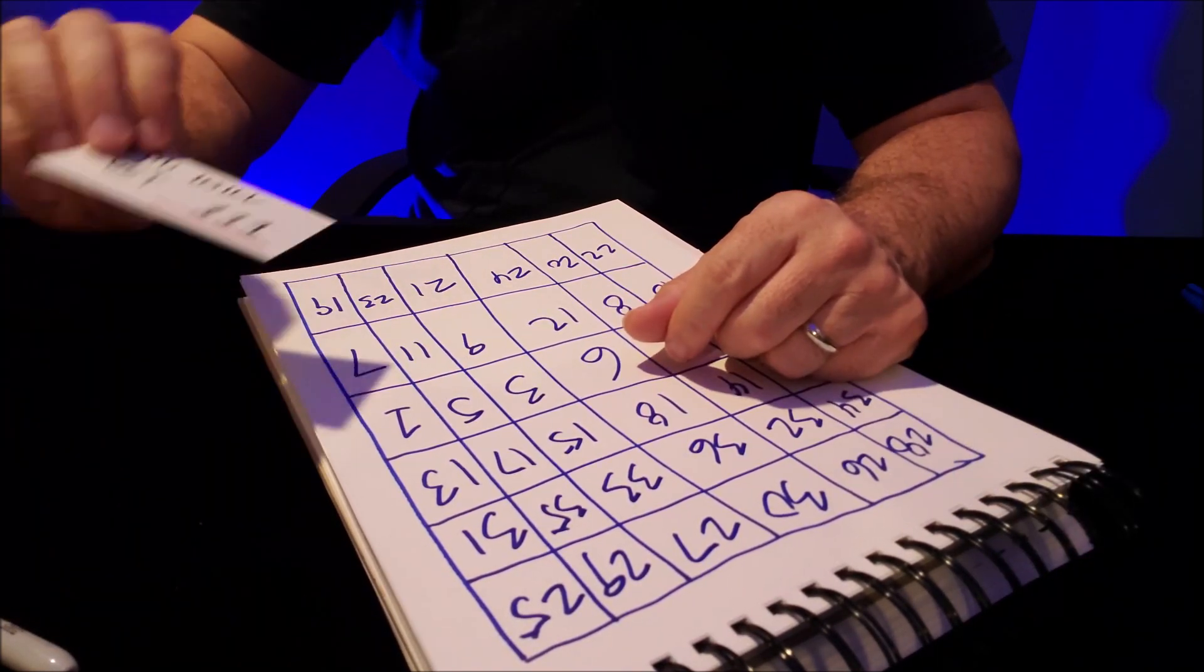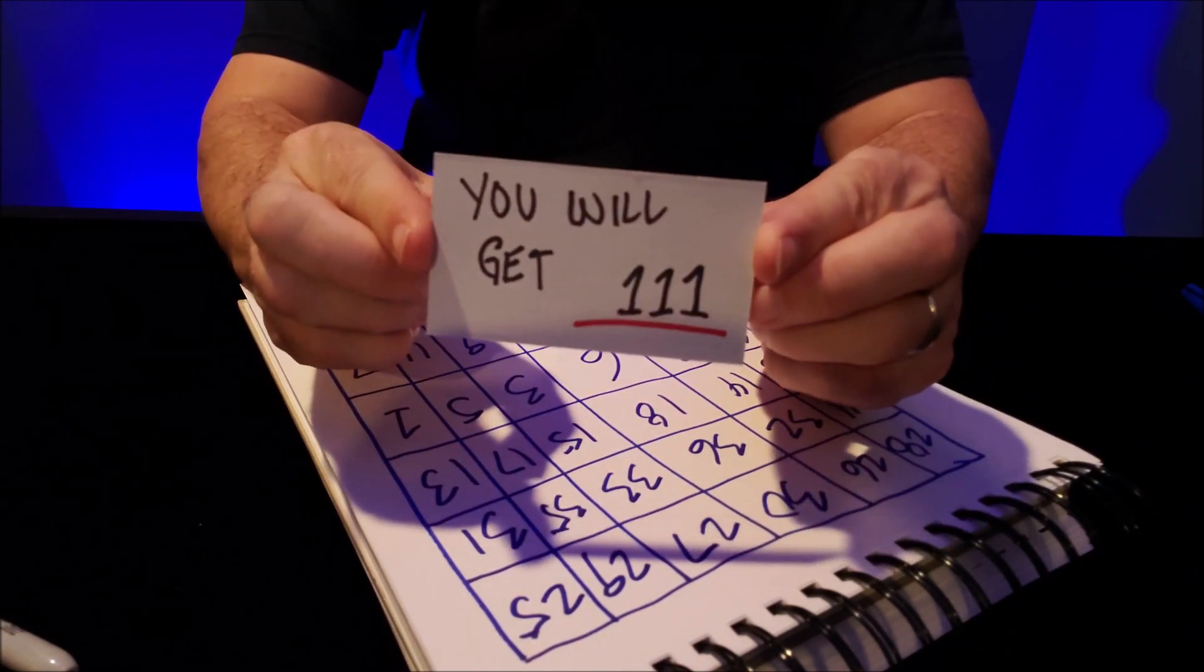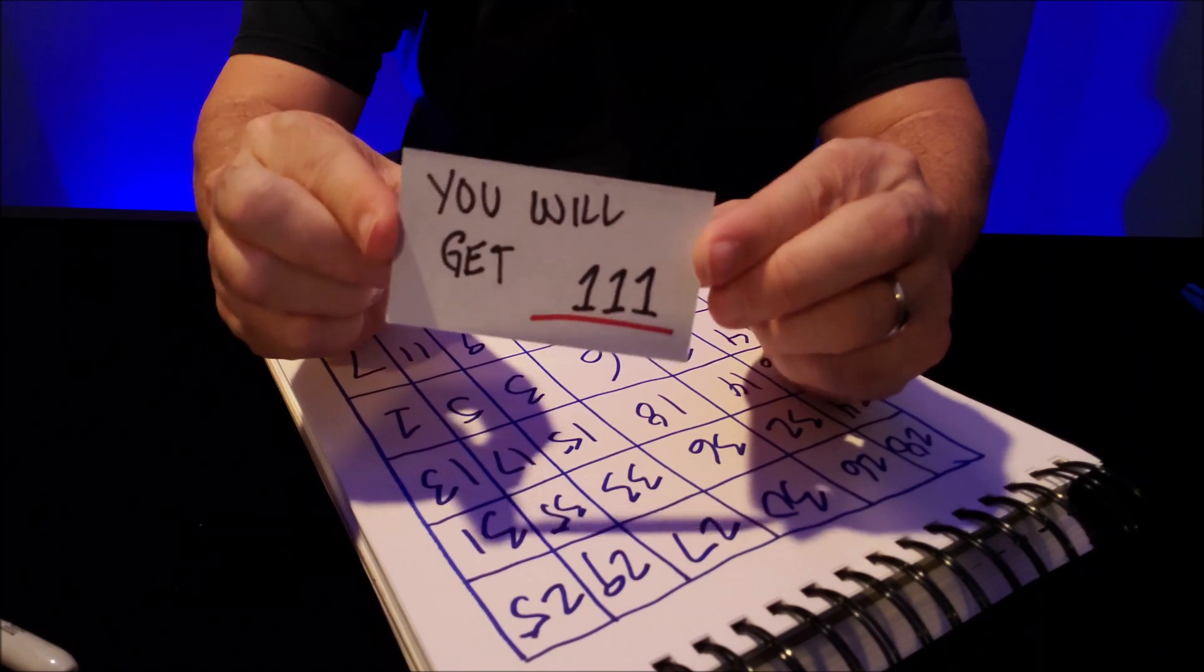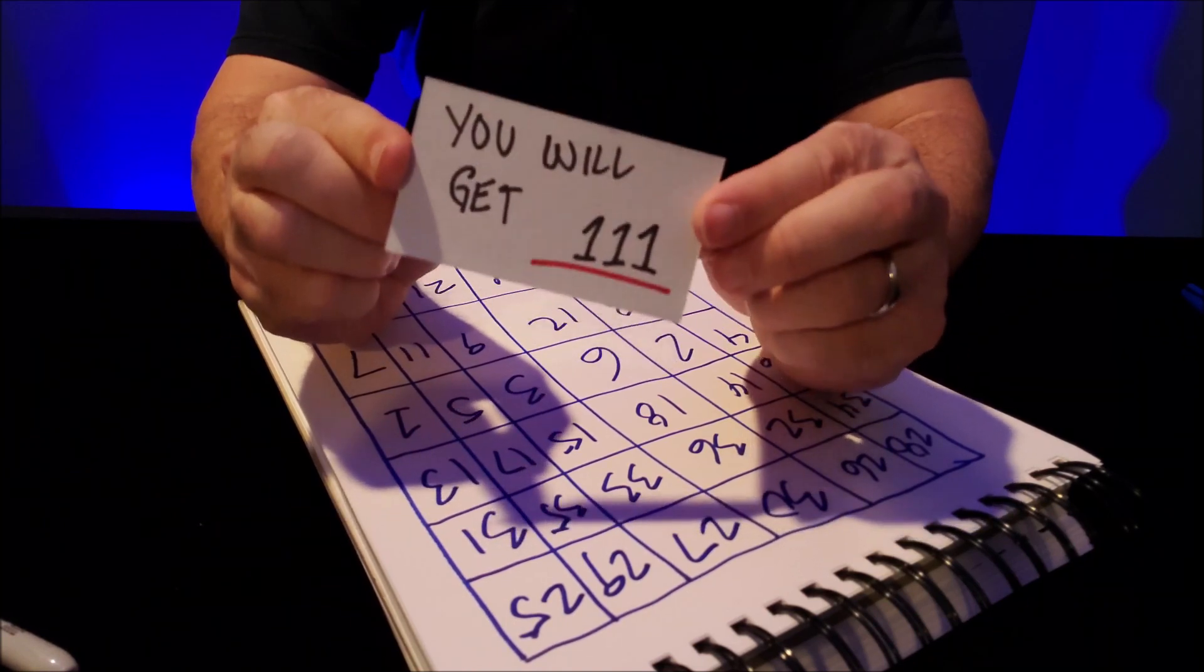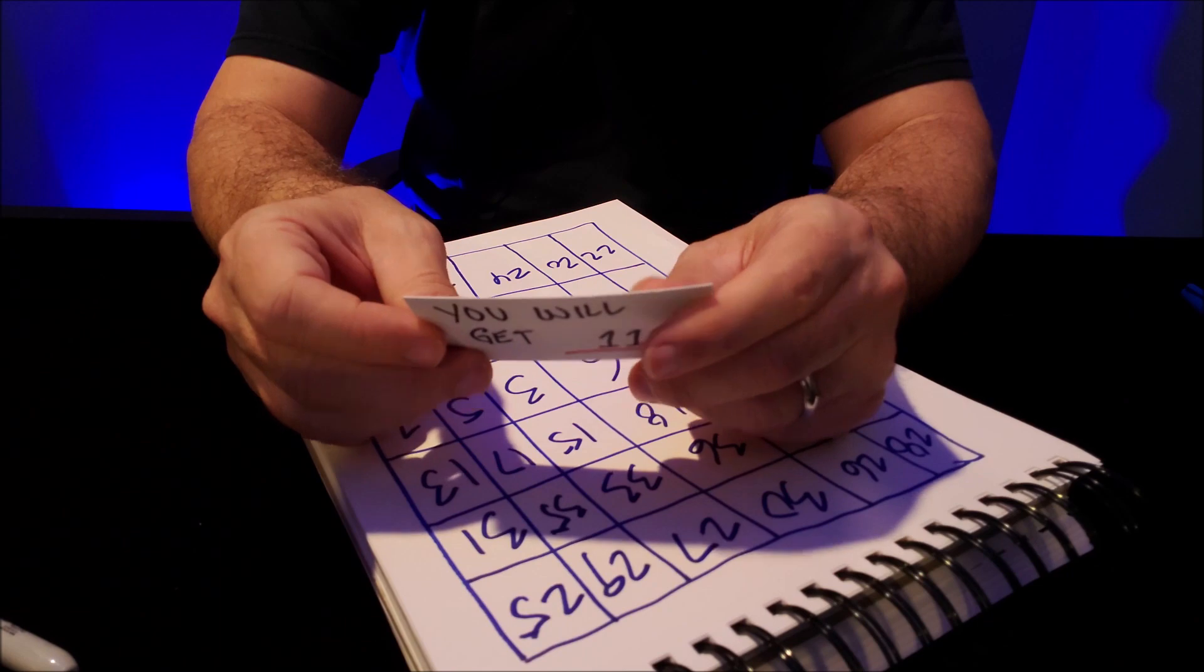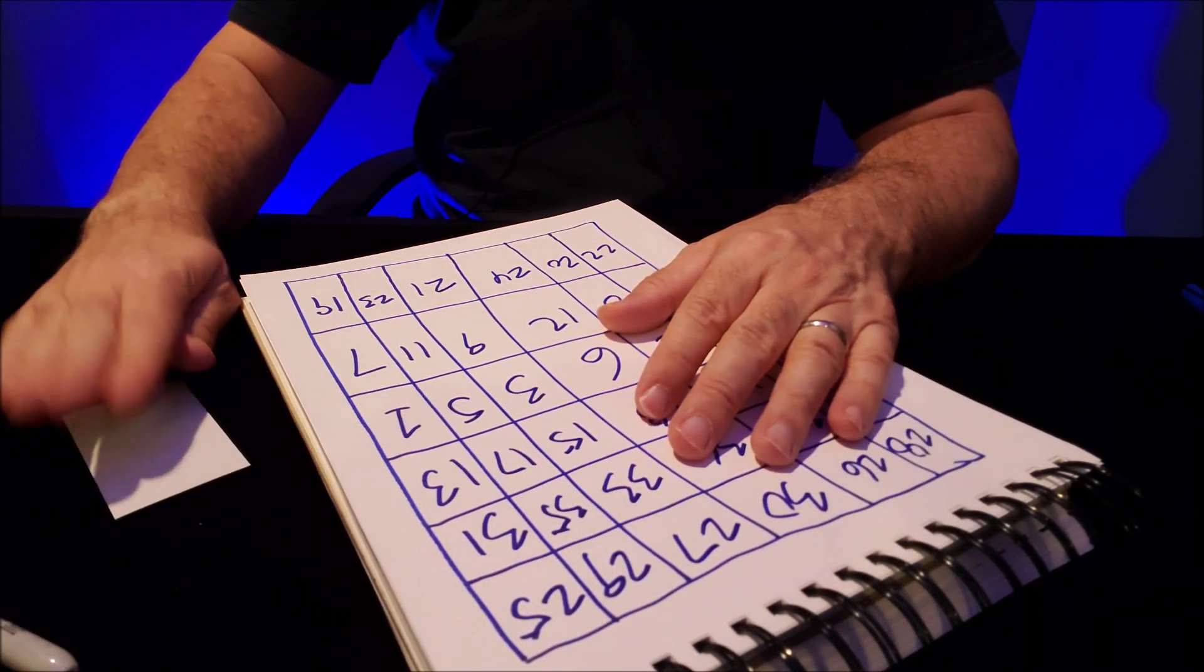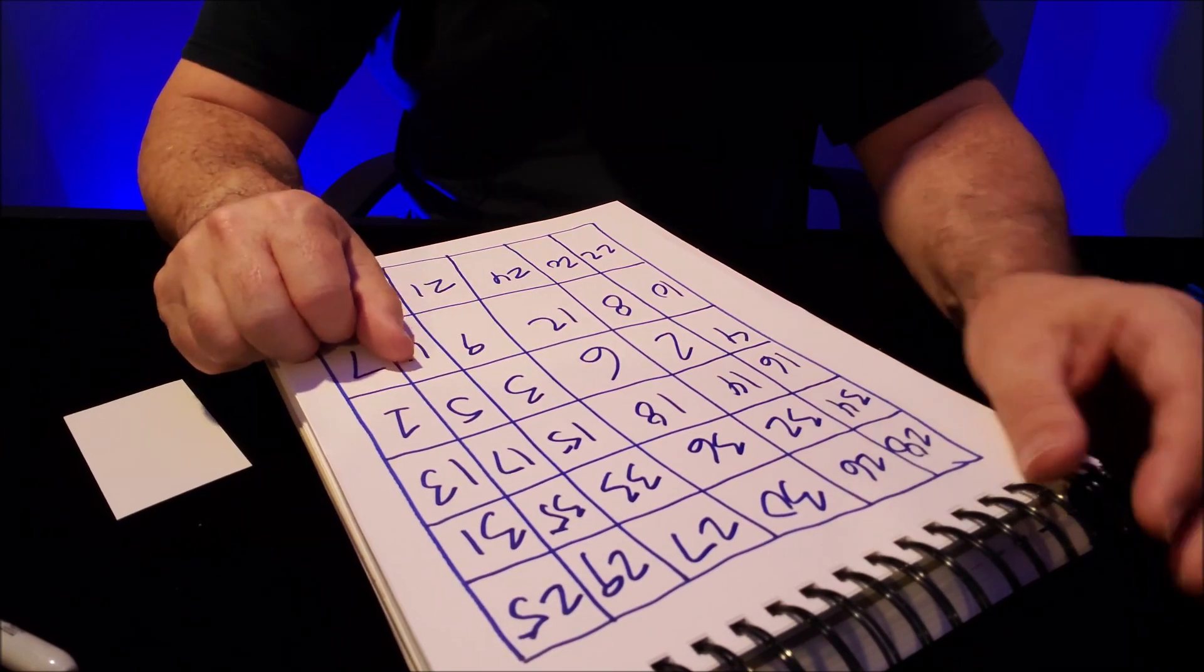Then you're ready to go. The last thing you're going to do is make a prediction card. It says you will get 111. So that's your prediction, this is your mentalism feat. You will get 111. The way the trick goes is really simple.